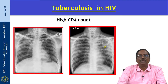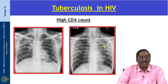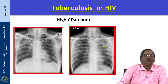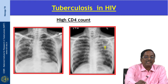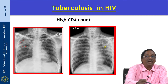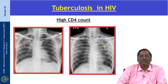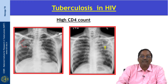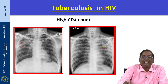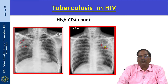This x-ray shows tuberculosis in HIV where the CD4 count is very high. There is a classical consolidation — an airspace opacity involving the upper zone, specifically the apical and posterior segment, typical of post-primary TB. There is also a cavity in the upper lobe.